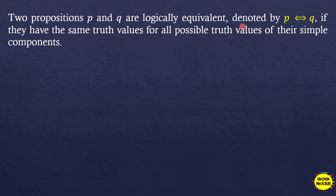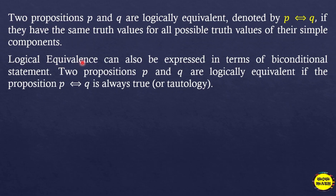Remember, when two propositions p and q are logically equivalent — denoted by p and this equivalence symbol — they have the same truth values for all possible truth values of their simple components. Logical equivalence can also be expressed in terms of a biconditional statement, which was studied in Grade 8. The two propositions p and q are logically equivalent if the biconditional proposition is always true.